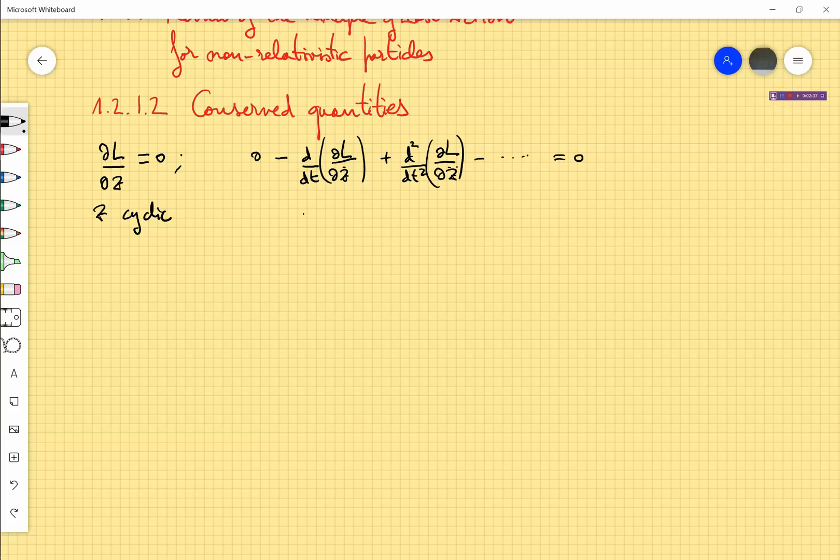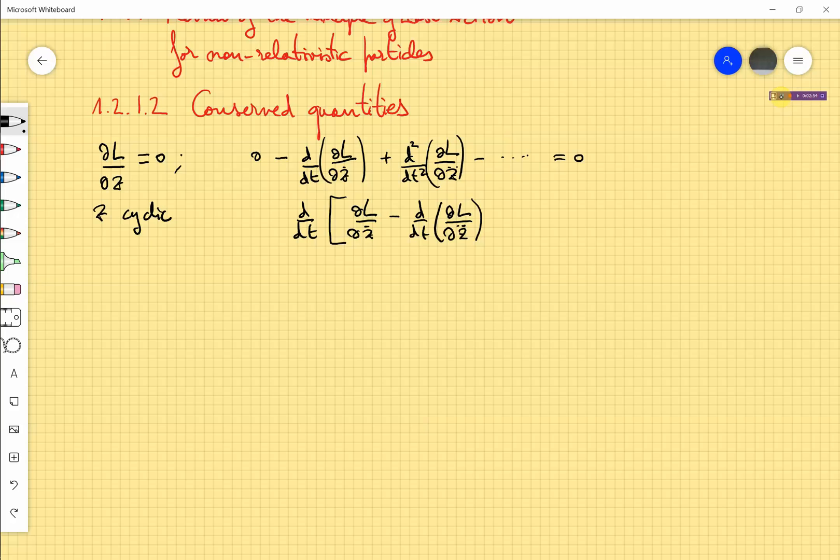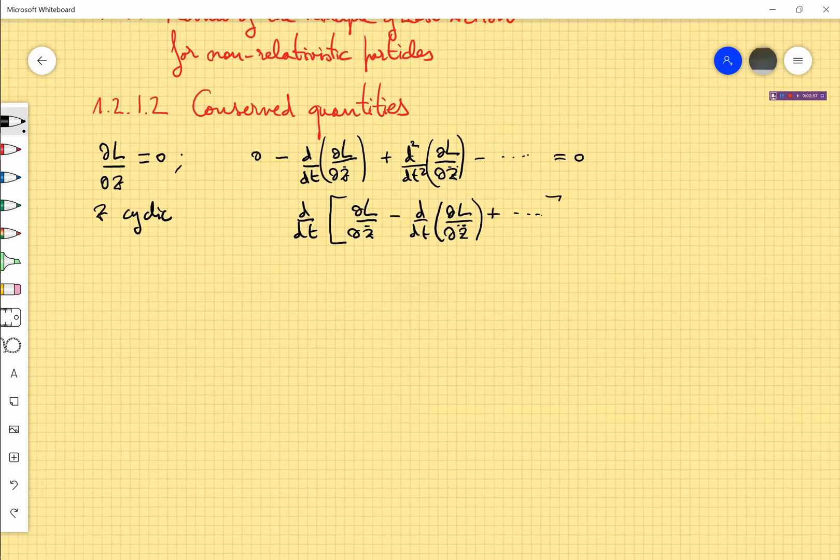Then you find that there is a combination which takes a constant value along the time. In order to find this property, this follows from the Euler-Lagrange equations of motion. So this happens only if the Euler-Lagrange equations of motion are satisfied. This is the conserved quantity.